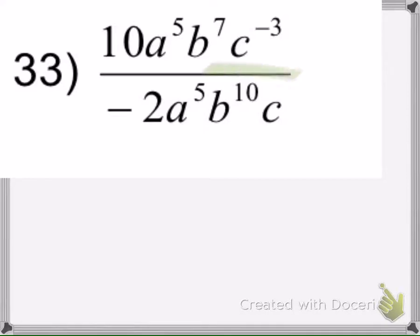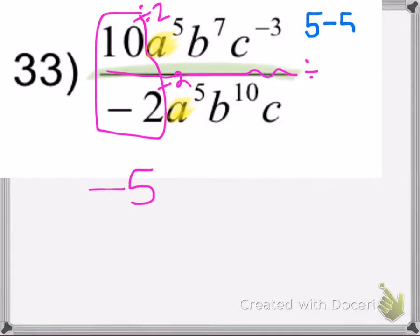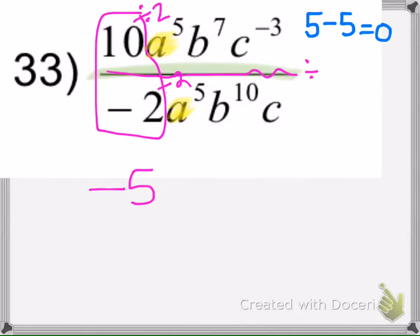In this problem we see the division bar. The 10 and the negative 2 are coefficients, so we divide: 10 divided by negative 2 is negative 5. Then we have common a bases, so the rule when dividing is to subtract the exponents — always top minus bottom — so 5 minus 5 is 0. Anything to the 0 power is 1, and negative 5 times 1 is just negative 5, so these cancel out and we don't need to write the 1.